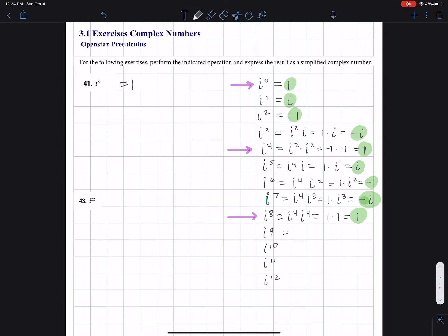It goes one, i, negative one, and then negative i, and then back to one again. We can just keep repeating these patterns. i to the twelfth is one. Now what's i to the 22?